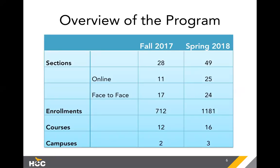In fall 2017, we launched the degree. Looking at the program overview: we had 28 sections, 11 of those online and 17 face-to-face. That netted us a little over 700 duplicated enrollments across 12 unique courses, offered online and at central campus.